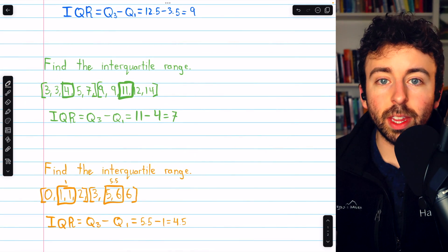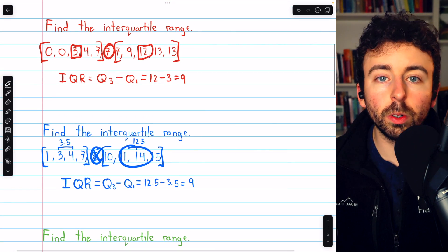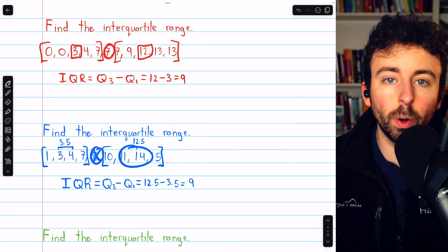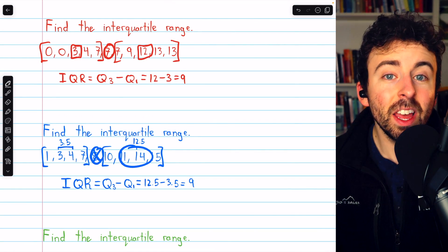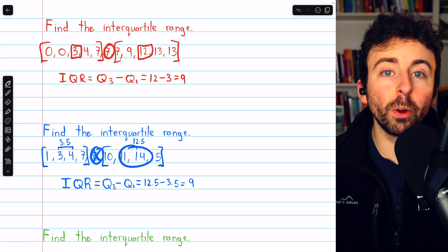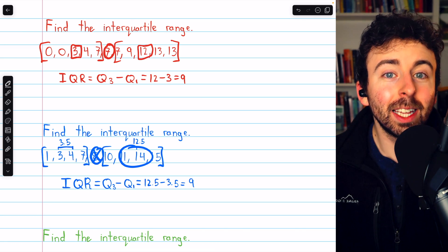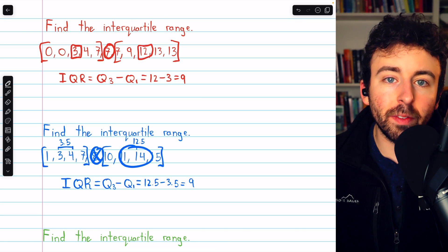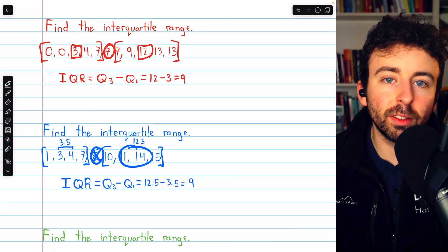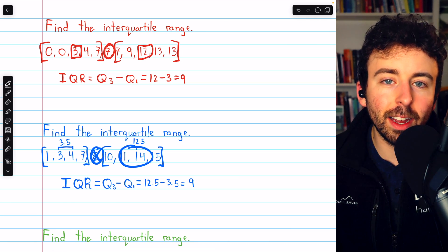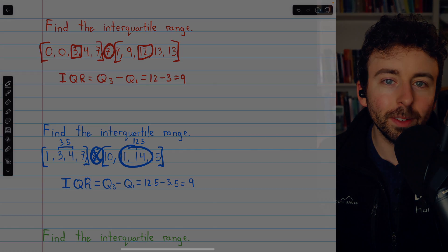That's how to deal with every possible situation you might encounter when finding the interquartile range of a data set by hand. Make sure you order the data first before you do this. Let me know in the comments if you have any questions, and be sure to check out my statistics course and statistics exercises playlists in the description for more. Thanks for watching.